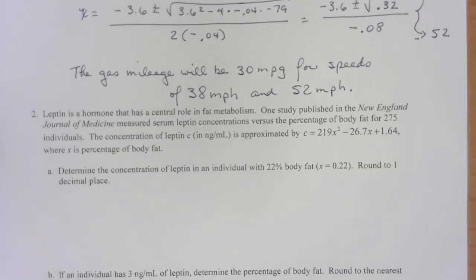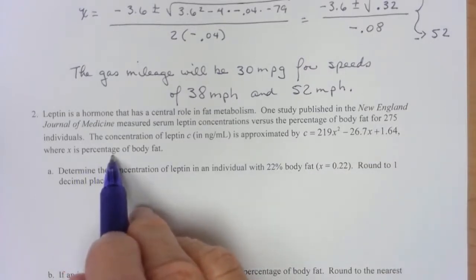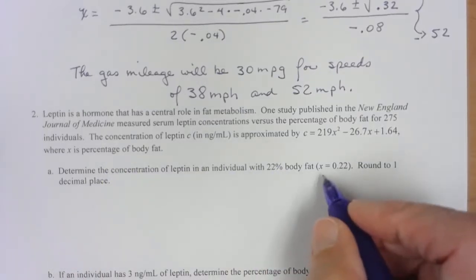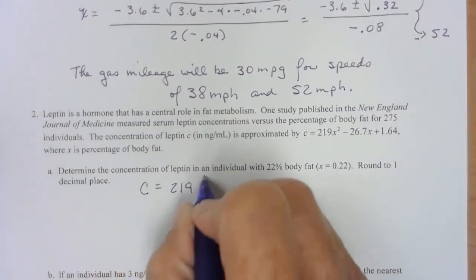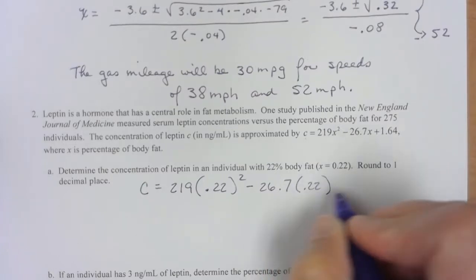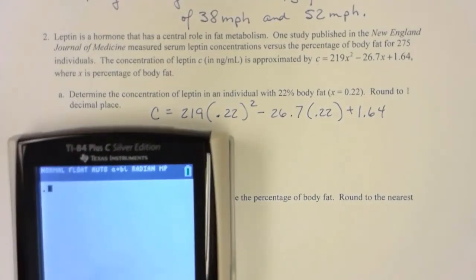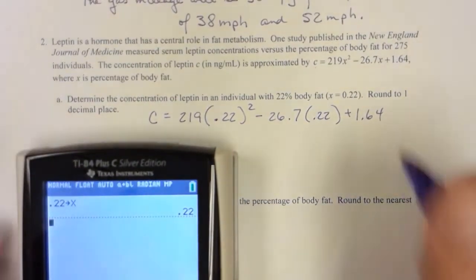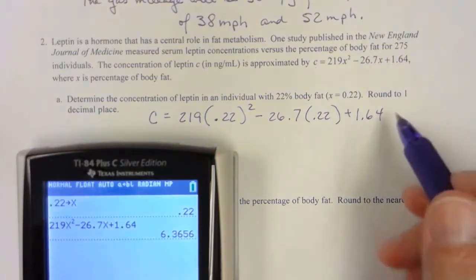Now remember, the x here is percentage, but it will need to be in decimal. We never put percent in. Round to one decimal place. So concentration of leptin, which is what the C is. So C can be 219 times 0.22 squared minus 26.7. So I like to store it in instead of pressing it in, because this way all I have to do is type in the original equation. So 219 x squared minus 26.7 x plus 1.64.